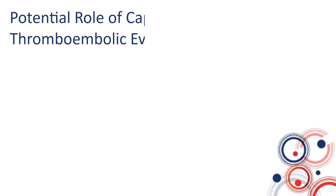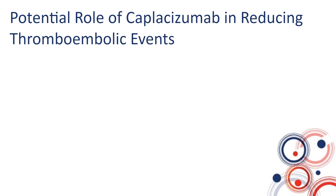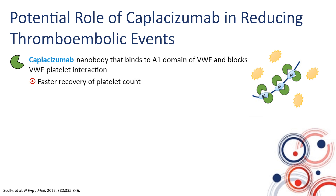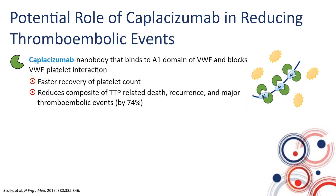This brings us to the potential role of caplacizumab in reducing thromboembolic events and improving outcomes. Caplacizumab is a nanobody that binds to the A1 domain of von Willebrand factor, blocking the interaction of platelets with von Willebrand factor and thus blocking platelet aggregate formation, leading to faster recovery of platelet count. In the phase three HERCULES trial, it reduced the composite of TTP-related death, recurrence, and major thromboembolic events by 74%, driven primarily by reducing early recurrences occurring within 30 days of stopping plasma exchange.